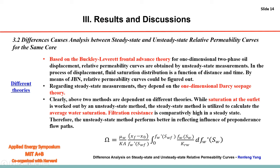The third cause is viscous fingering. With regard to the unsteady-state method, it has certain velocity requirements in order to eliminate end effects. It is therefore much more likely for the higher velocity to cause viscous instability, further leading to viscous fingering. These three causes together lead to the difference between steady-state and unsteady-state relative permeability curves.